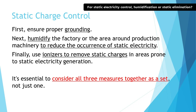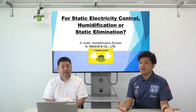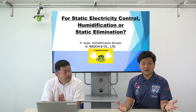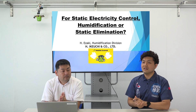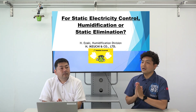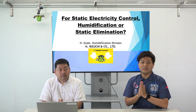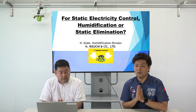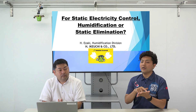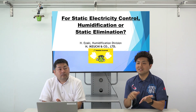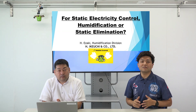It would be best to have a good understanding of the merits and demerits mentioned earlier, and install what you need where you need it. It's not a question of which is better — it's just a matter of difference. Both are necessary, but there is an order to take: proper grounding first, humidification comes next to control the environment, and then use the ionizer or static eliminator where necessary. This is the most efficient and recommended way.